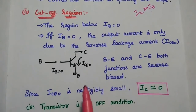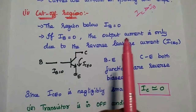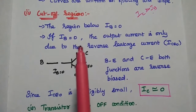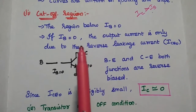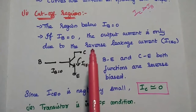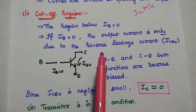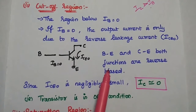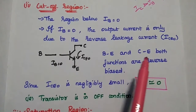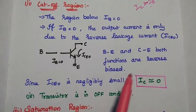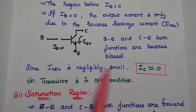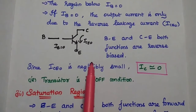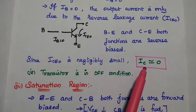In the cut-off region, it is the region below IB equal to 0. IB equal to 0 means there is no input. Without the input, the output current is only due to the reverse leakage current ICEO due to the reverse bias condition. Both base emitter and collector emitter junctions are reverse biased. Since ICEO is negligibly small, the transistor is in an off condition with no output.